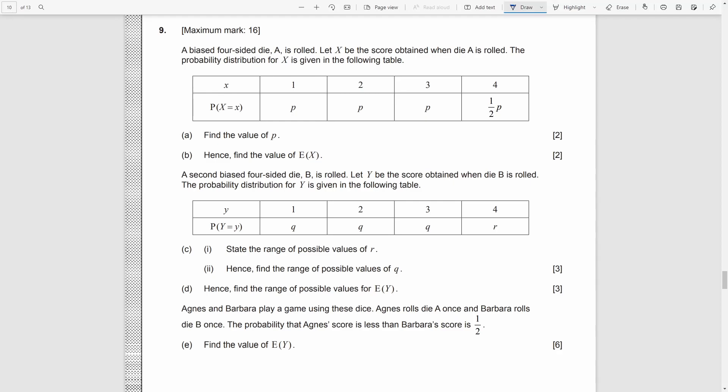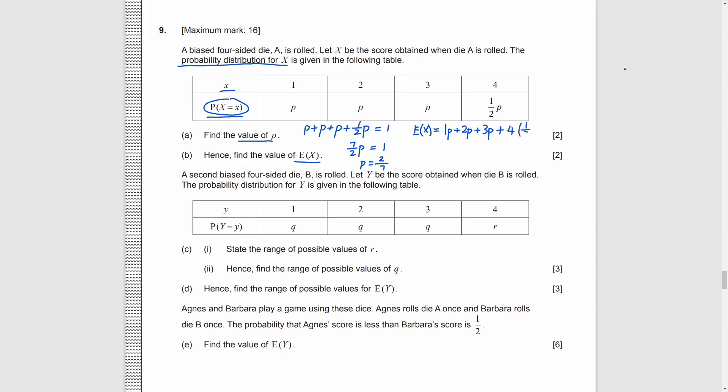Final question. 9. Here is a probability distribution table for x. Part A, we need to find p. As the probability of all the situations add together must be 1, we can simply make the equation. And get p equals 2 over 7. Part B, we need to find the expected value of x. That means, we need to add all the values multiplying their own probability together. So, we get 8p, which is 16 over 7.